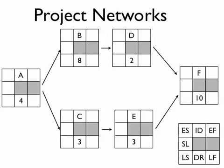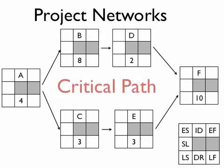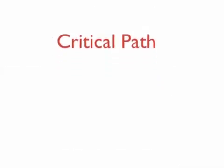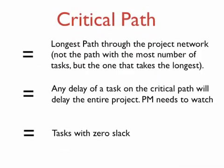Looking at our project network with durations filled in, we can derive all other properties. First, let's identify the critical path — the path through the network that defines when the project ends. Any task along the critical path, if delayed, will delay the entire project. We have paths A-B-D-E, A-B-D-F, and A-C-E-F through the network. The critical path is the longest path, not necessarily the one with the most tasks. Another way to define it: tasks that have zero slack. The project manager needs to watch the critical path carefully.